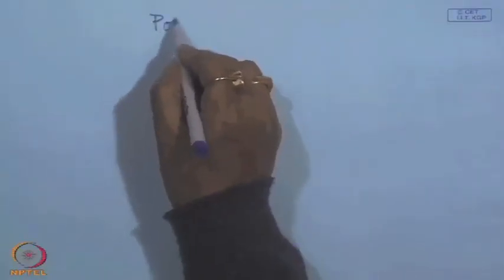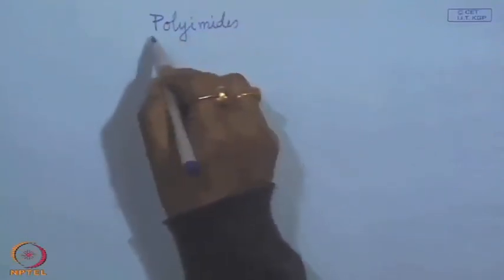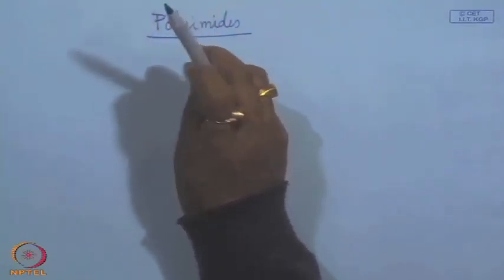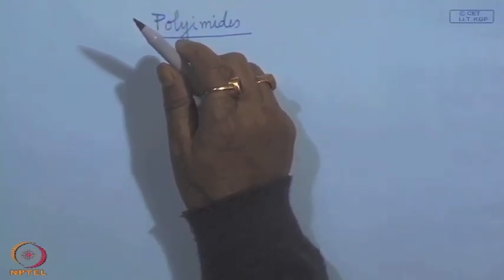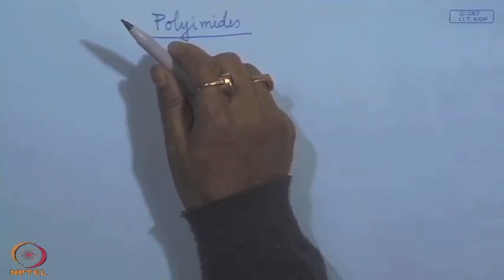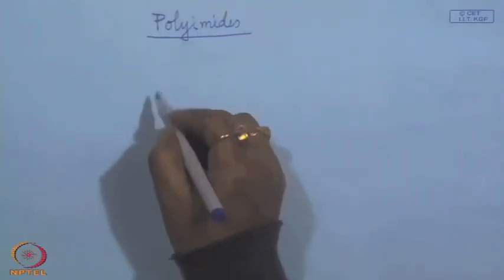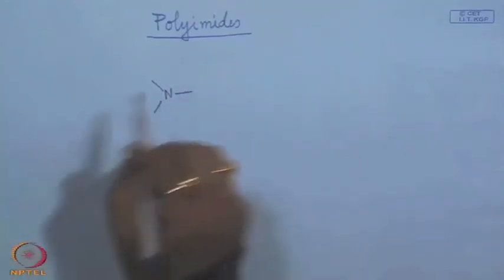Now let us look at another class of engineering or specialty polymer — polyimides. Today we are discussing specialty polymers: polyamides, polyacetal, polycarbonates, polyesters, and then polyimides. Polyimides are a class of polymer having imide linkage.